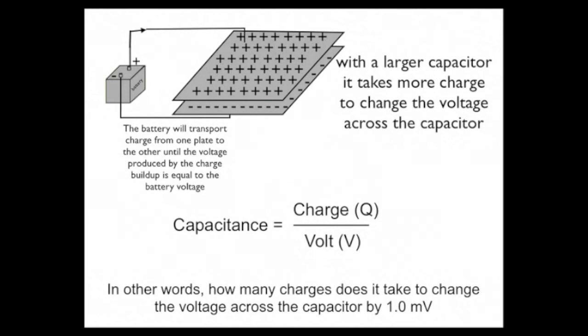Again, an immediate buildup, but now there are twice as many positive charges on the top plate than there were on the smaller plate, because it can hold more. In other words, with a larger capacitor, it's going to take more charge to change the voltage across the capacitor. That's the point.